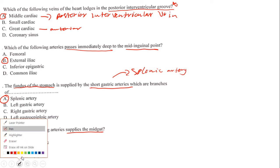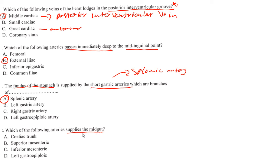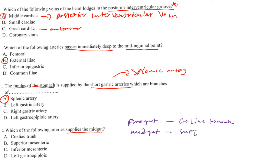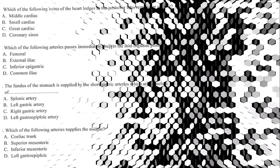The fundus of the stomach is supplied by the short gastric arteries, which are branches of the splenic artery. The answer is A. For the question about which artery supplies the midgut: the foregut is supplied by the coeliac trunk, the midgut is supplied by the superior mesenteric artery, and the hindgut is supplied by the inferior mesenteric artery. The answer is the superior mesenteric artery.